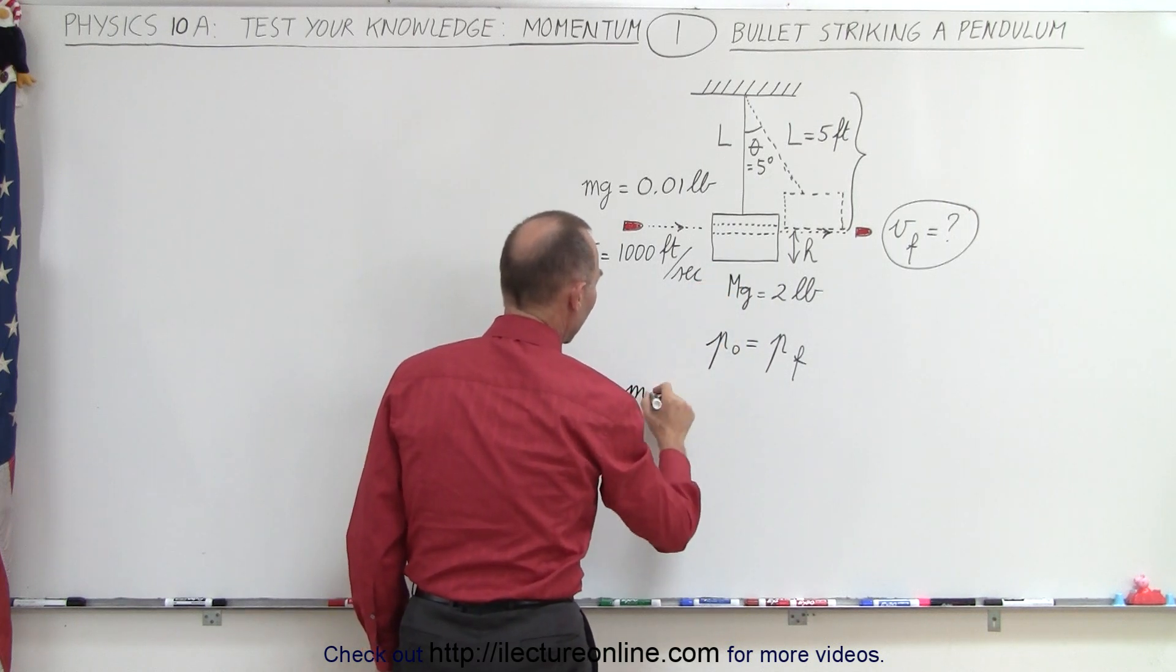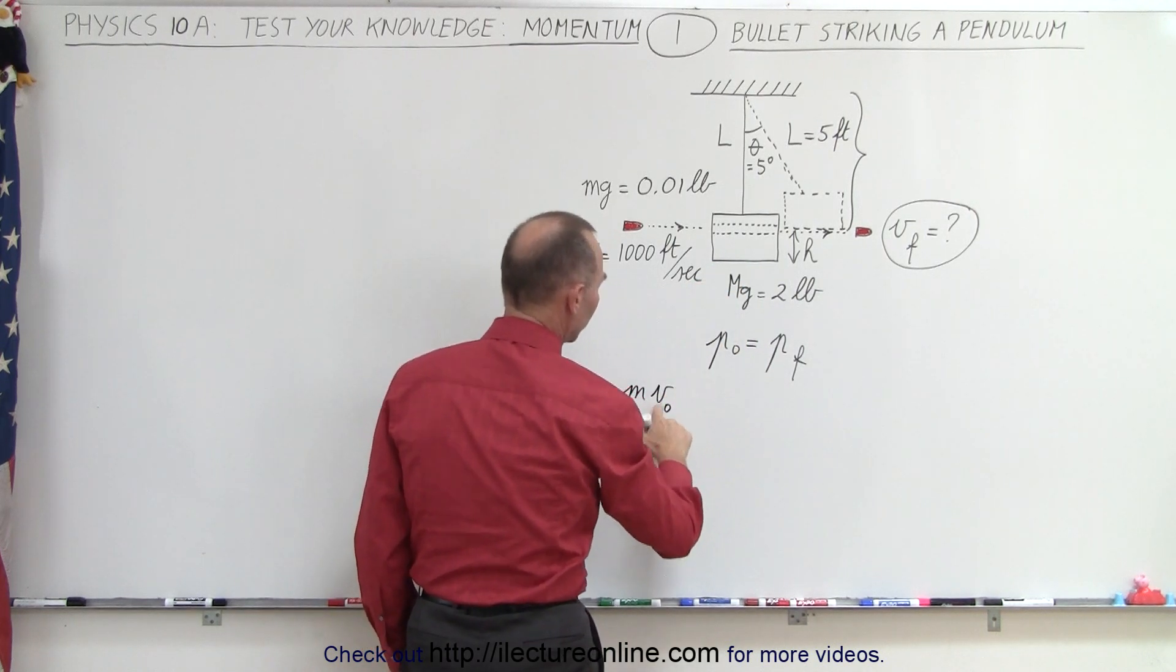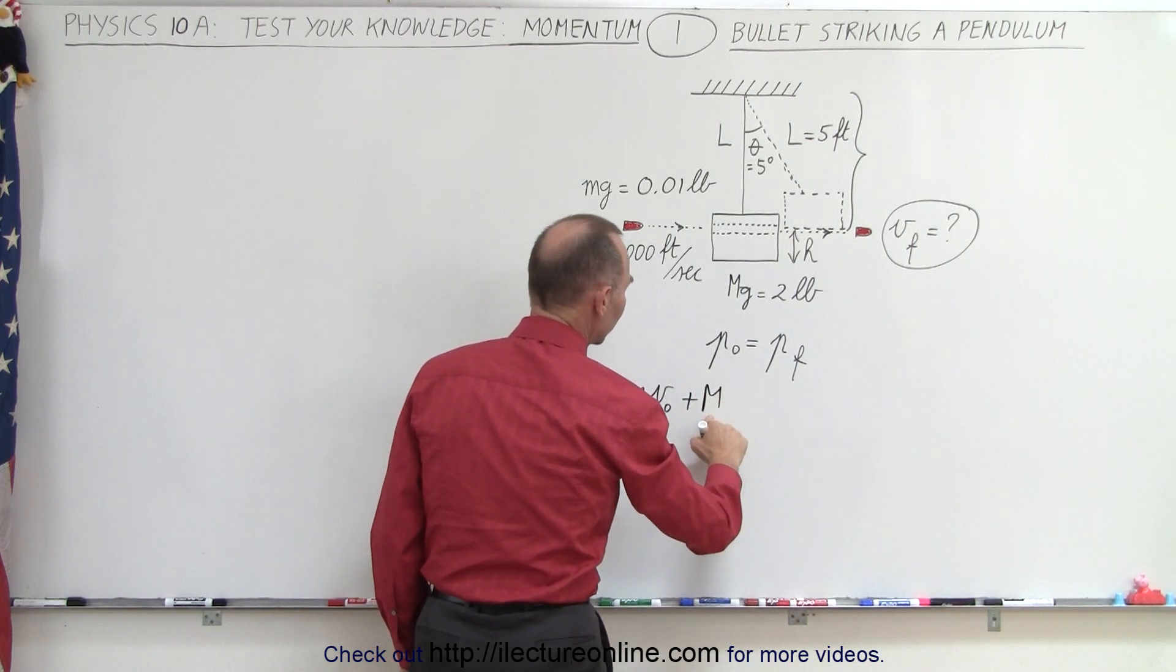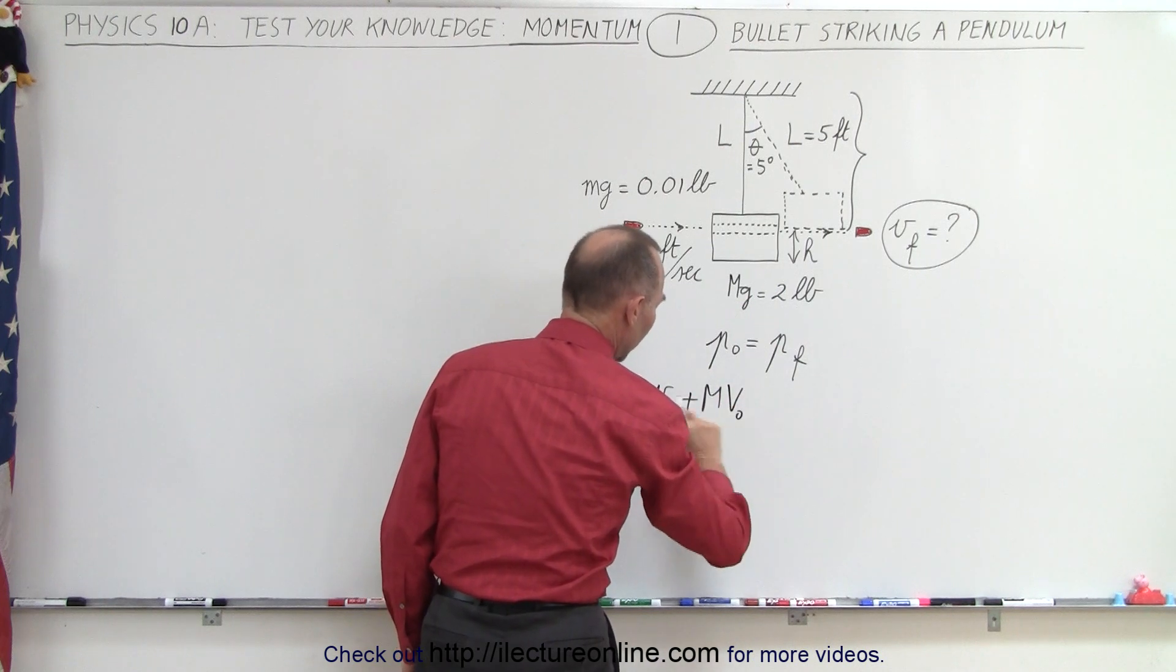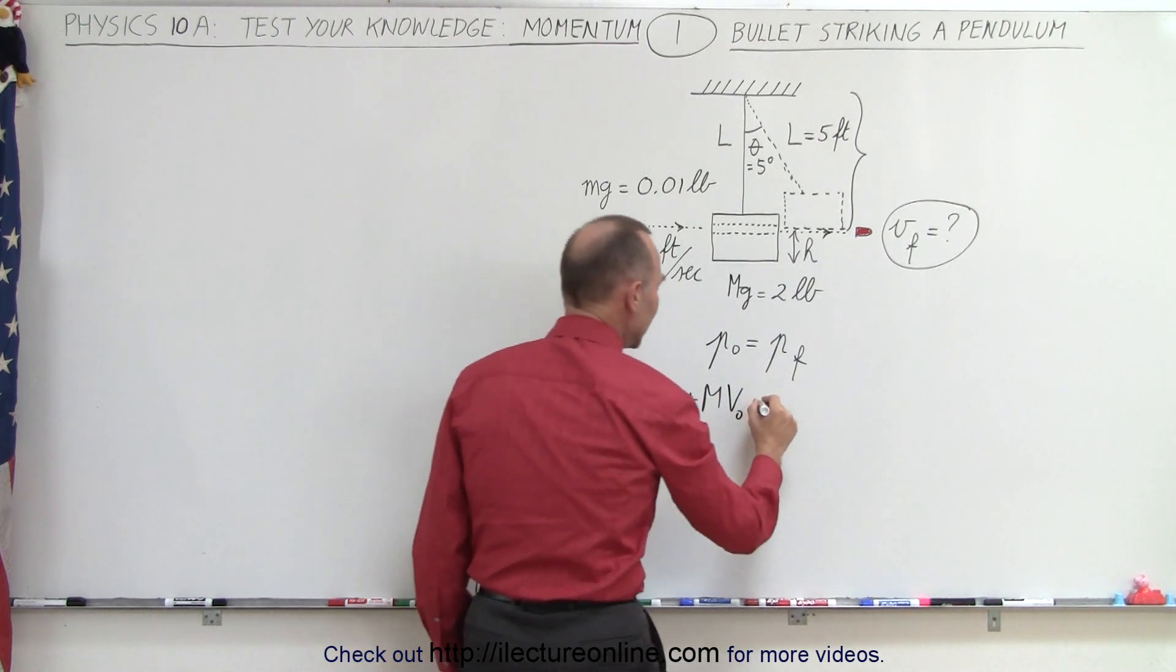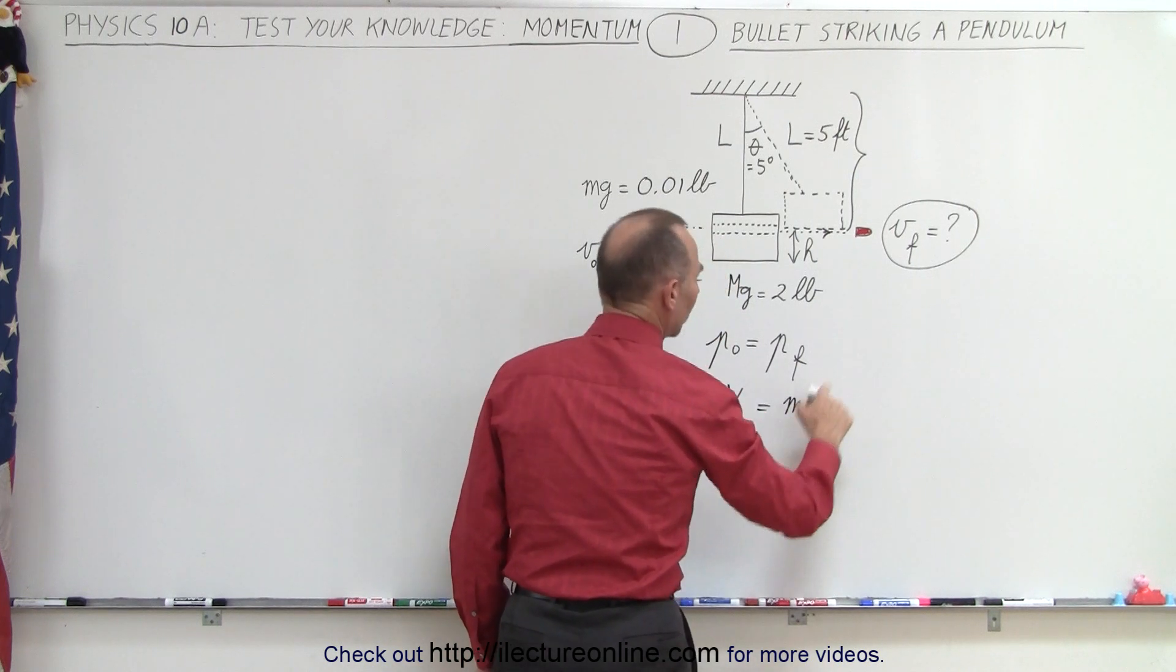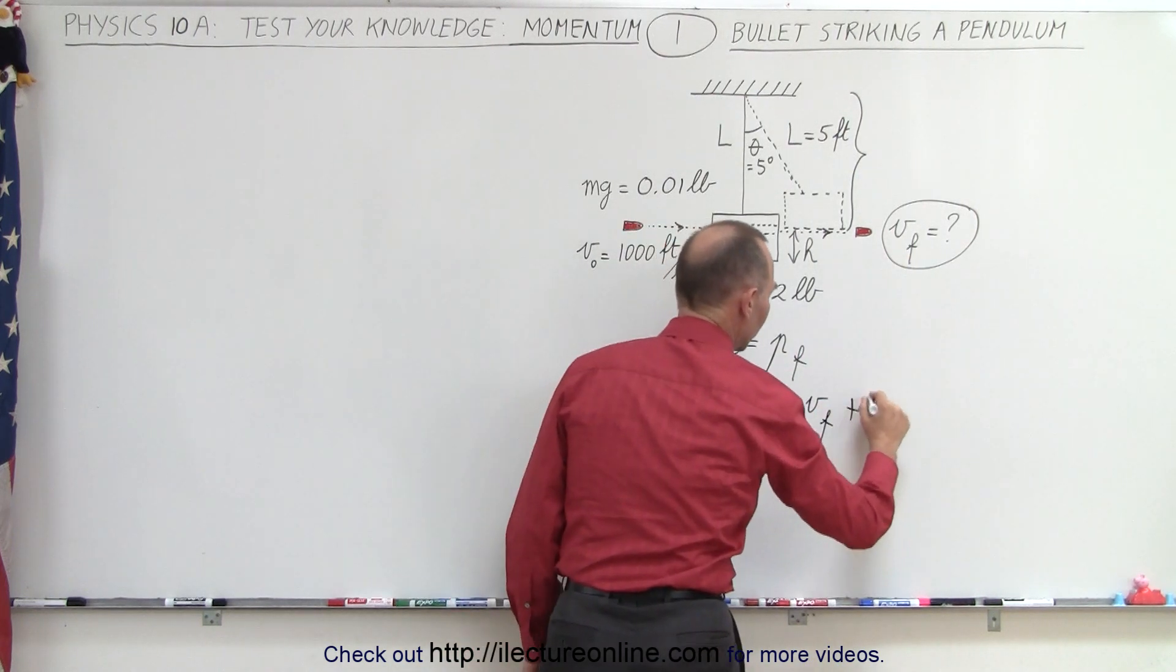Small m times the velocity initial of the bullet plus big M, the mass of the block, times the velocity initial of the block, which is zero, equals m v final, which is what we're trying to find, plus big M V final.